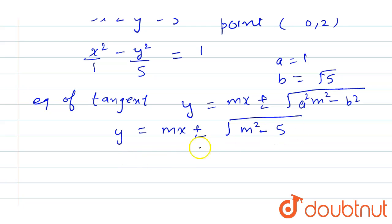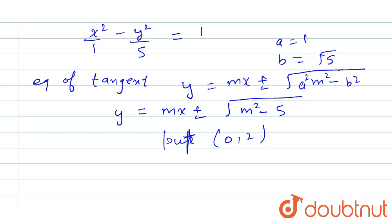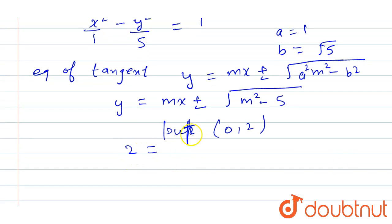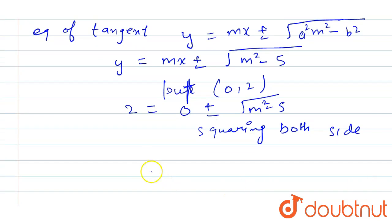Since the tangent passes through the point (0,2), we substitute to get 2 = 0 + √(m² - 5). Squaring both sides, 4 = m² - 5, so m² = 9, and therefore m = ±3.